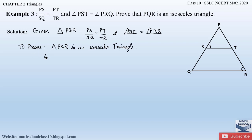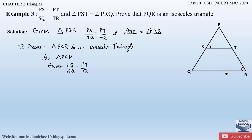Now let us prove this. In triangle PQR, we are given that PS/SQ is equal to PT/TR. If we apply the converse of the BPT theorem — if any two sides of a triangle have equal proportion, then the line intersecting those two sides is parallel to the third side — we can conclude that ST is parallel to QR. Therefore, ST is parallel to QR, by Theorem 2.2, which is the converse of the BPT theorem.